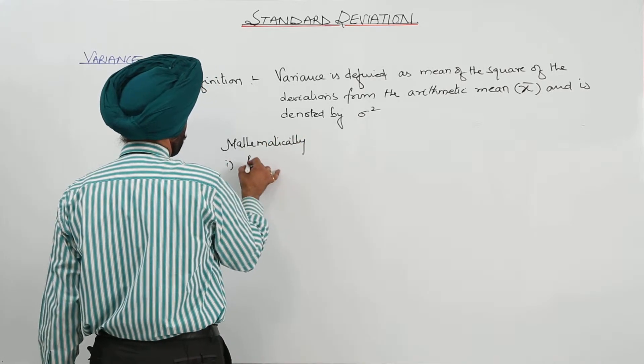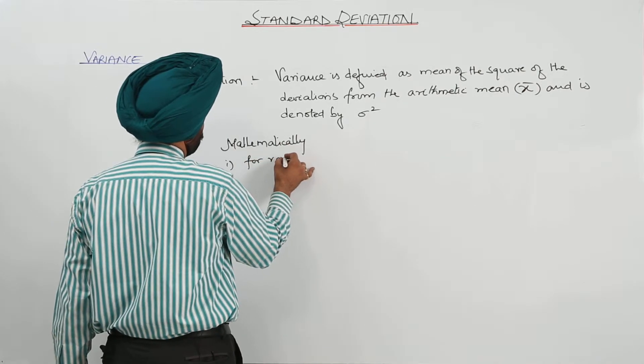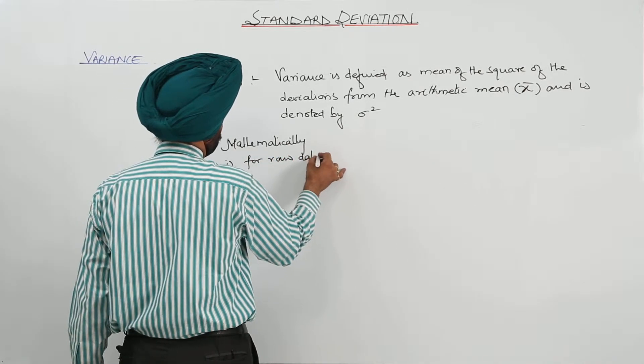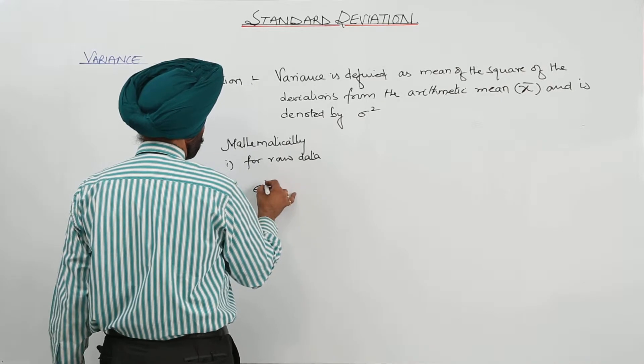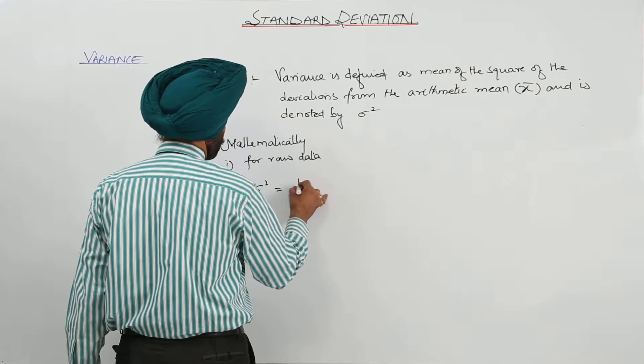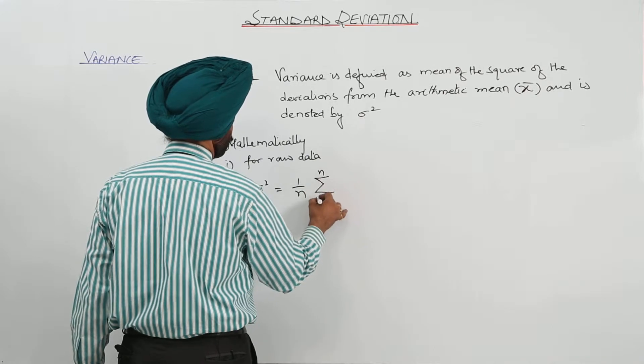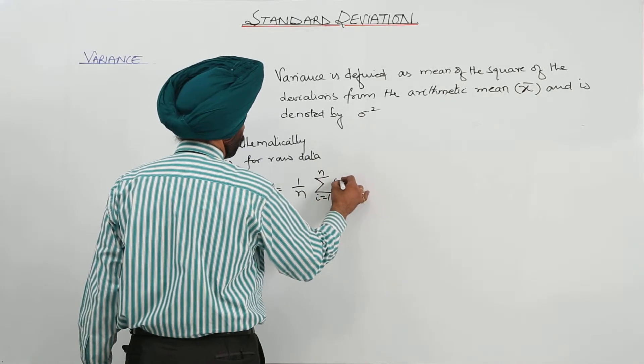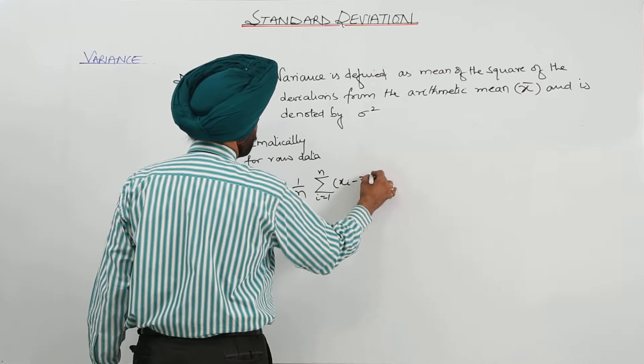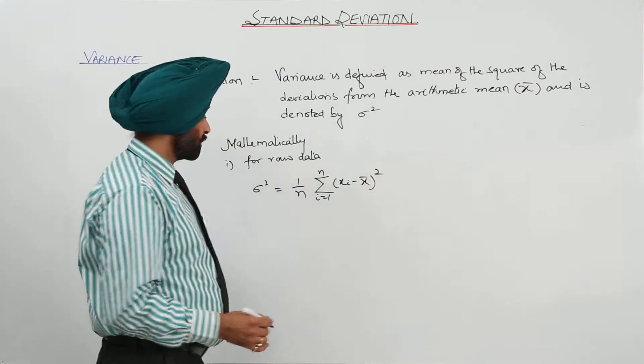Mathematically, number one for raw data, the formula is given by 1 by n, summation for xi minus x mean whole square.